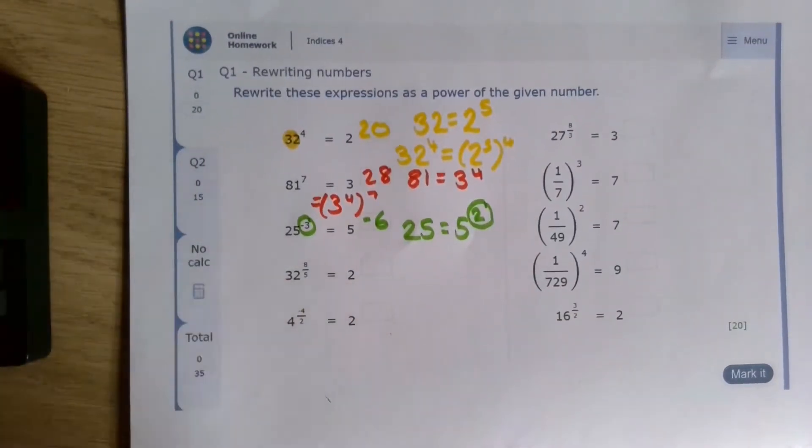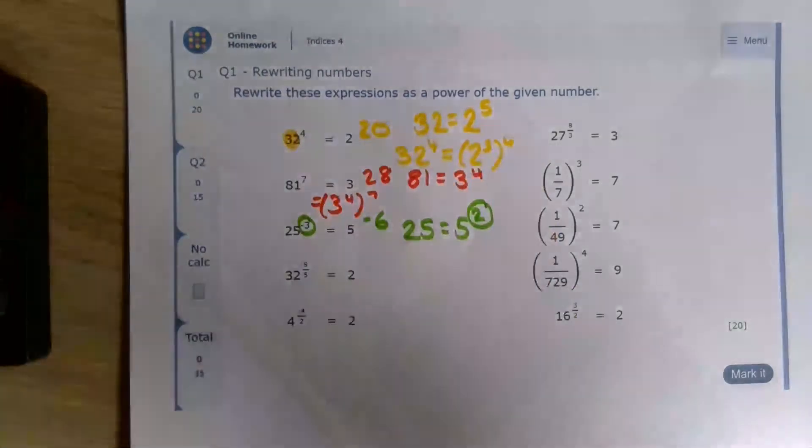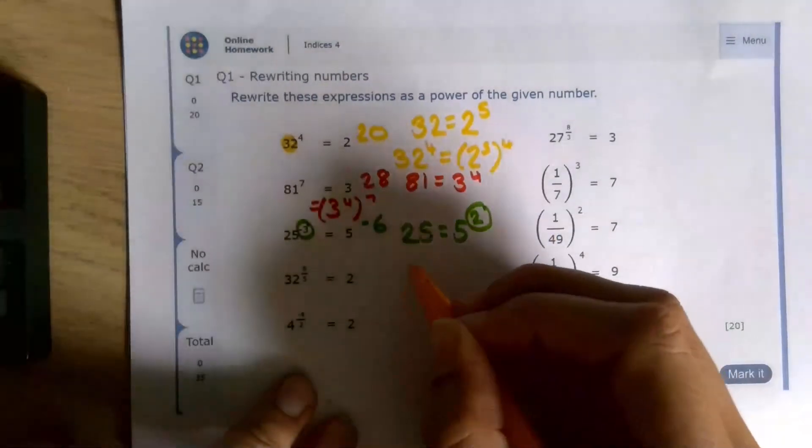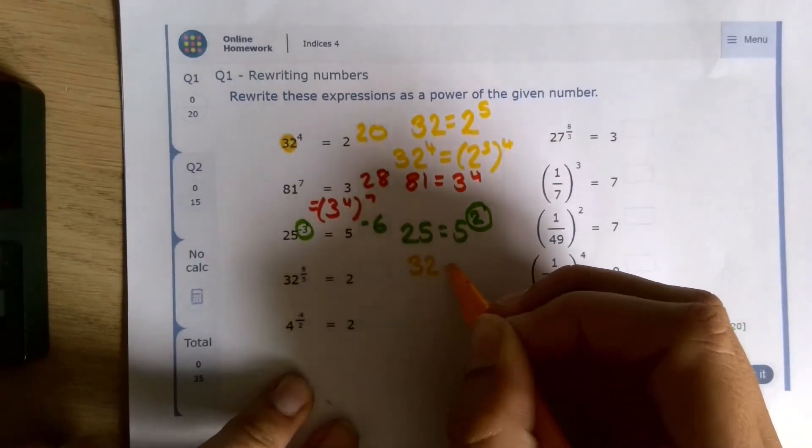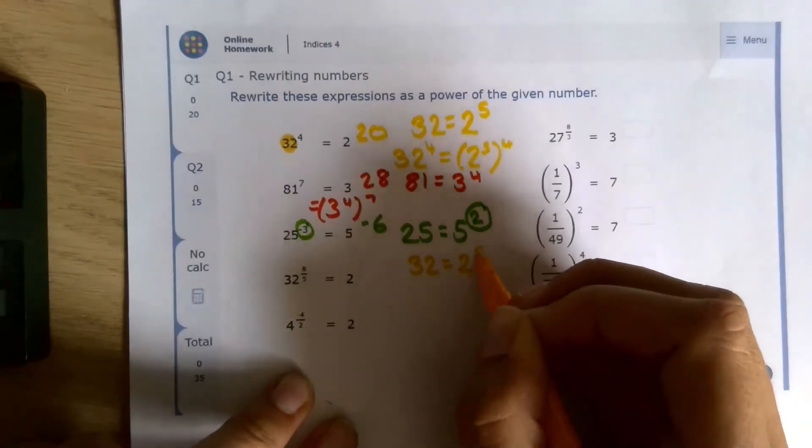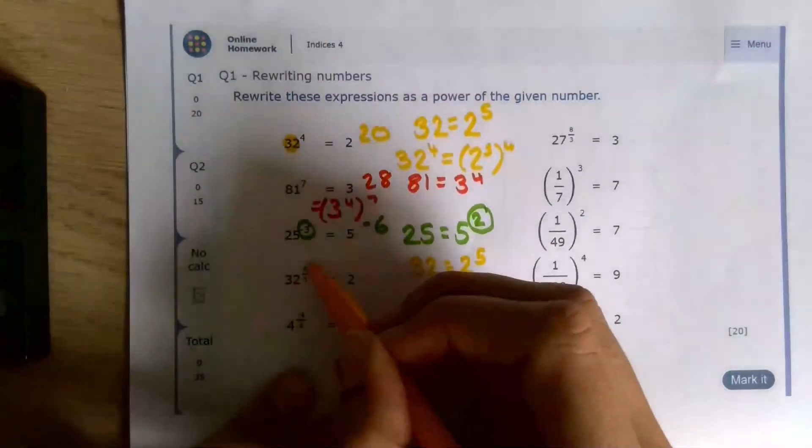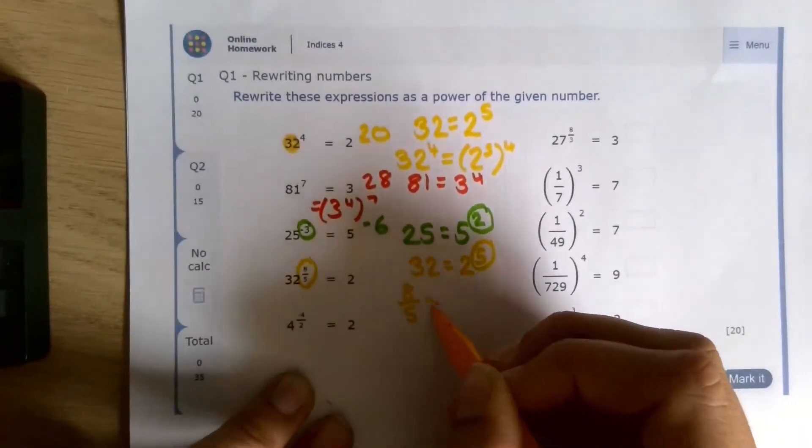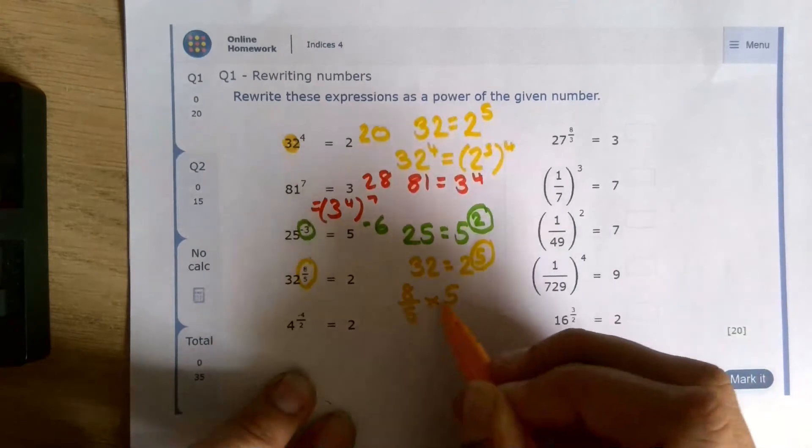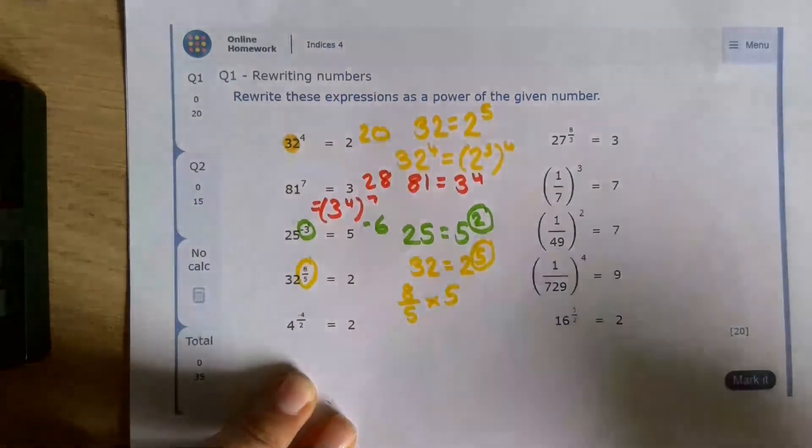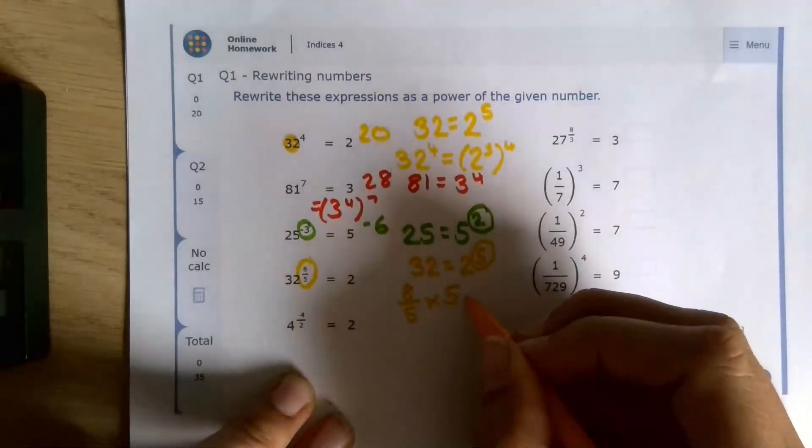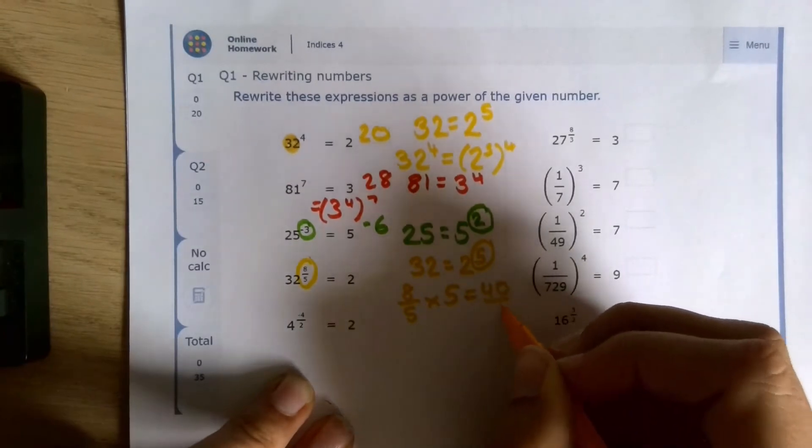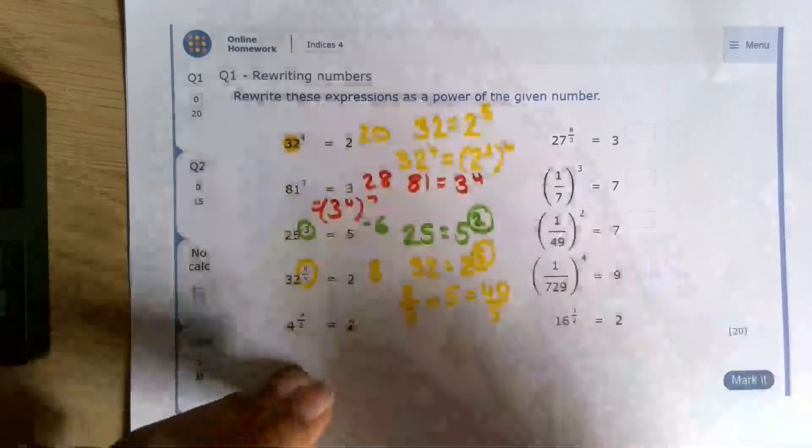32, again, we've got power of 2. We already know that 32 is 2 to the power of 5 because we already worked it out. So we can remind ourselves of that fact. And this time, we're going to multiply these two powers here. Well, 8 over 5 times 5 is 40 over 5, which is just 8. And we simplify as much as we can.